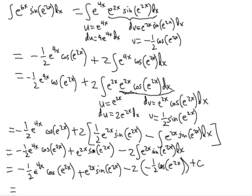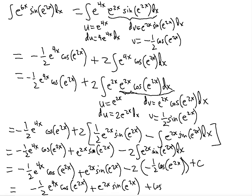Combining all terms, we have four separate terms including the constant. The final antiderivative is: negative one half e to the 4x cosine of e to the 2x, plus e to the 2x sine of e to the 2x, plus cosine of e to the 2x, plus a constant. That's a complex result, but this is how you work through the problem.